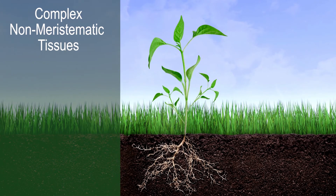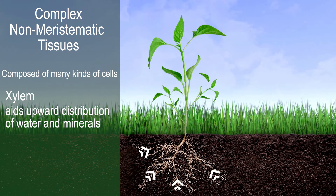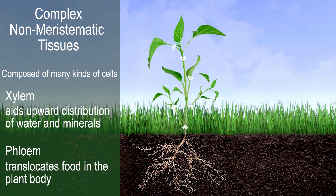Complex non-meristematic tissues are composed of more than one cell. Two types of them are xylem, which aids upward distribution of water and minerals, and phloem, which translocates food in the plant body.